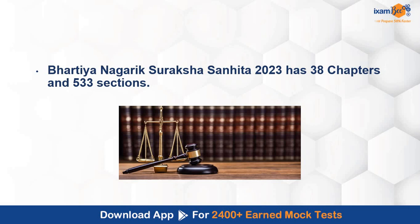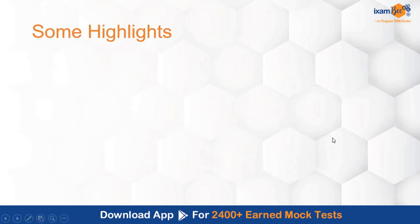Bharatiya Nagarik Suraksha Sahita has 38 chapters in all, and the number of sections has been increased to 533. Many provisions have been removed, many new provisions have been added, and the maximum changes are in the modification of existing sections. Structurally it is largely the same, but section numbers have changed. The chief substantive provisions are quite the same; the major changes relate to timelines and forensic evidence. Let us now see the highlights.